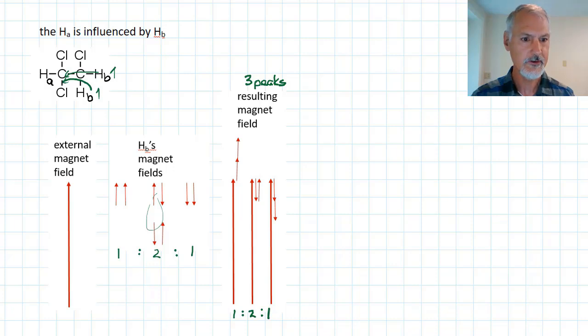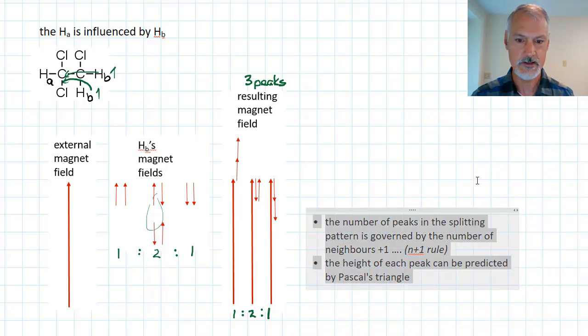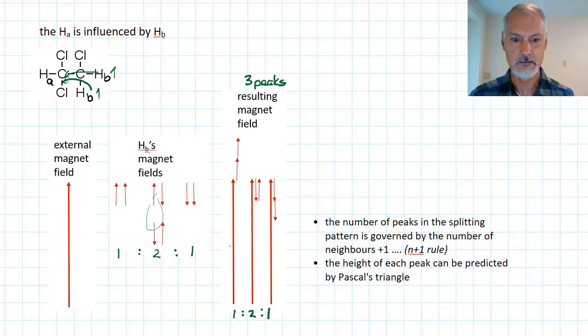So this gives us this rule that we use when we deal with the splitting pattern that generates. First of all, the number of peaks is governed by the number of neighbors plus 1. Now, so again, if I look back here at my example A, it has two neighboring hydrogens. Now those two neighbors can therefore generate three environments, the n plus 1 rule. Now the ratio of peaks is given by Pascal's triangle.